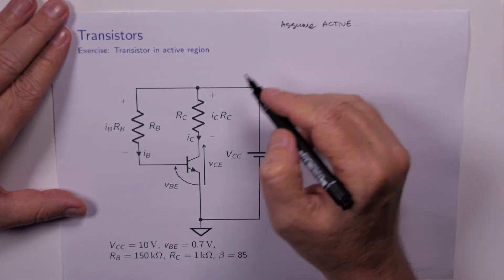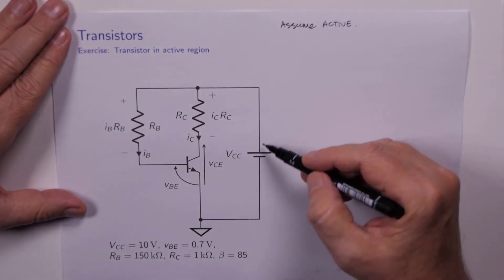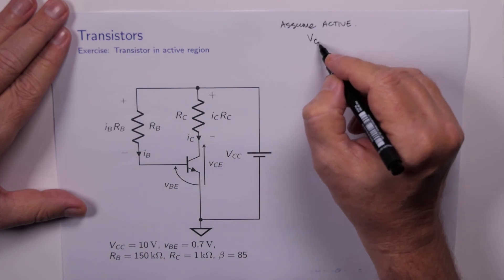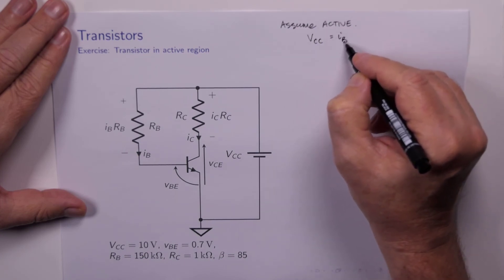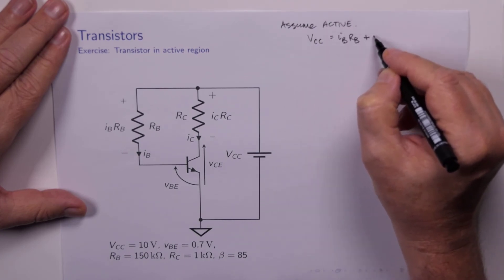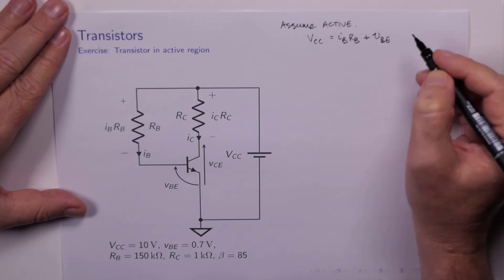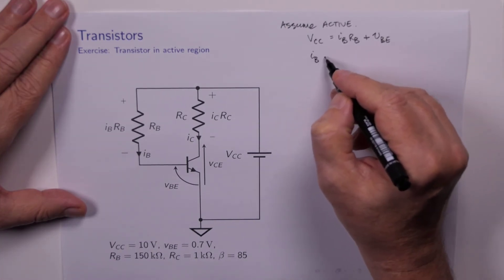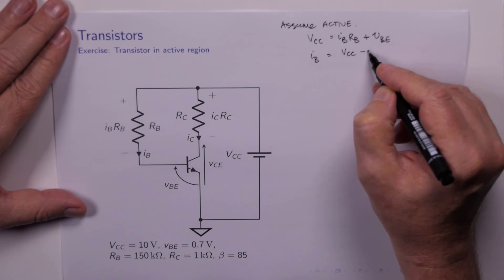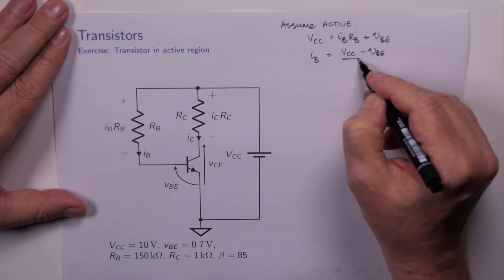this time right from the get go, that the transistor is active. If we concern ourselves with the input loop,